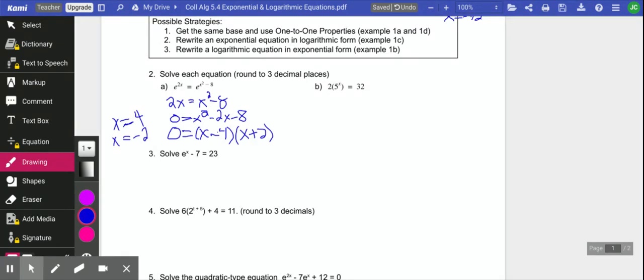The next one, I'm going to at least start by dividing by 2. Seems like a good place to start. So we have 5 to the x equals 16. I can't use a 1 to 1 property because I can't get the same basis. So let's rewrite this in logarithmic form. This is log base 5 of 16 equals x.